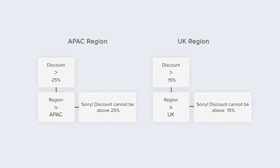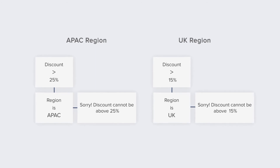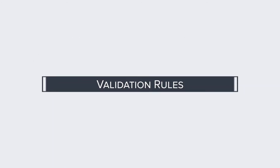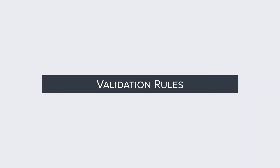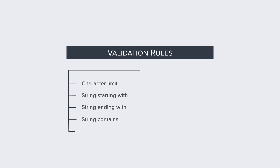We just saw how validation rules can be applied to check the discount value for leads. Similarly, validation rules can also be used for checking the character limit, string starting with, string ending with, string contains, checking whether the field is empty, and more.